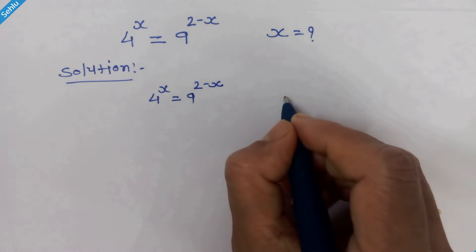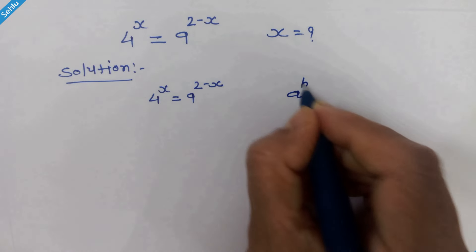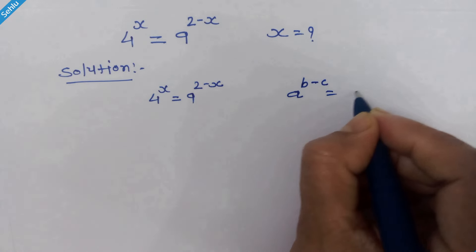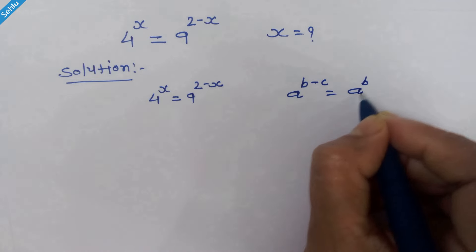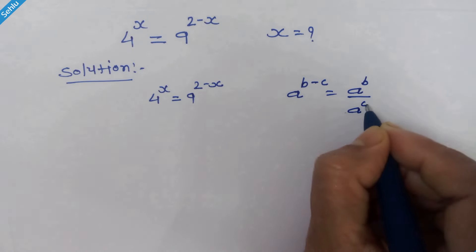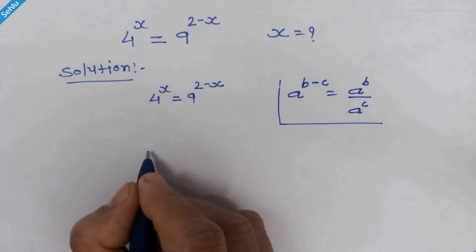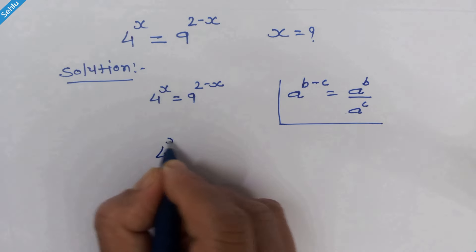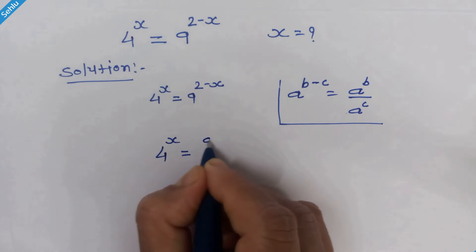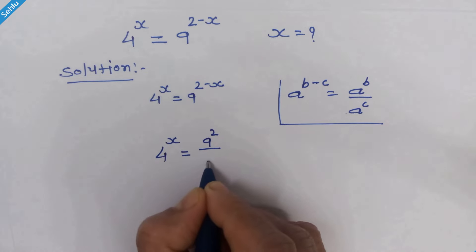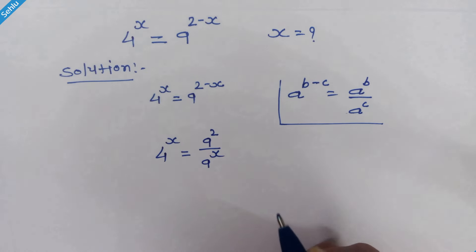On the right-hand side, we'll apply the rule where a raised to b minus c equals a raised to b upon a raised to c. So 4 raised to x equals 9 squared upon 9 raised to x.